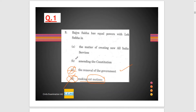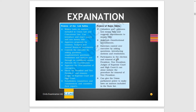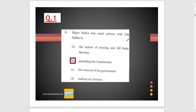Looking at option A, the matter of creating new All India services — this is not an equal power; it is a special power of Rajya Sabha alone and not Lok Sabha, so this option is also wrong. Rajya Sabha has equal power with Lok Sabha in the context of amending the constitution, so option B — approval for constitutional amendment — is the correct option.